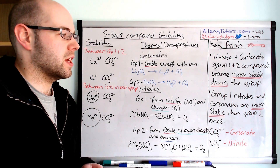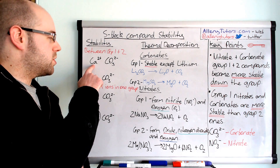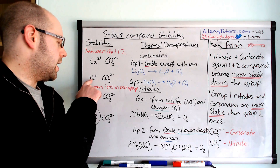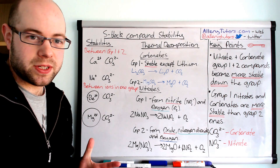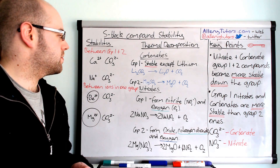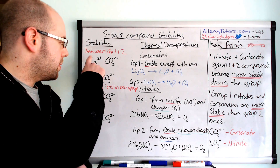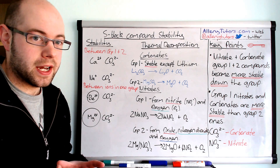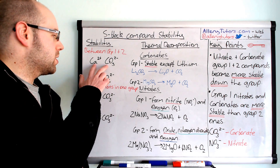Group 1 nitrates and carbonates are more stable than group 2. I've got a group 2 element here — calcium — bonded with a carbonate, and a group 1 element also bonded with a carbonate. The principle is the same for nitrates as well, but I've picked these two as an example. Effectively, it has to do with the charge of the cation — the positive charge.